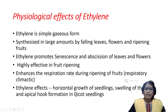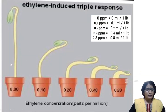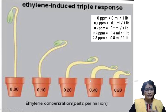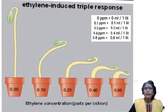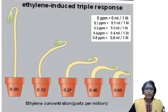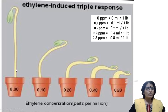Another ethylene effect is the triple response in dicot seedlings. In an experiment with five pots of dicot seedlings, ethylene is added in different concentrations: zero in the first pot, then 0.1 ppm, 0.2 ppm, 0.4 ppm, and 0.8 ppm (ppm means parts per million — 0.1 ppm means 0.1 ml of ethylene per liter of water). The ethylene concentration is gradually increased and changes in seedling growth are observed.